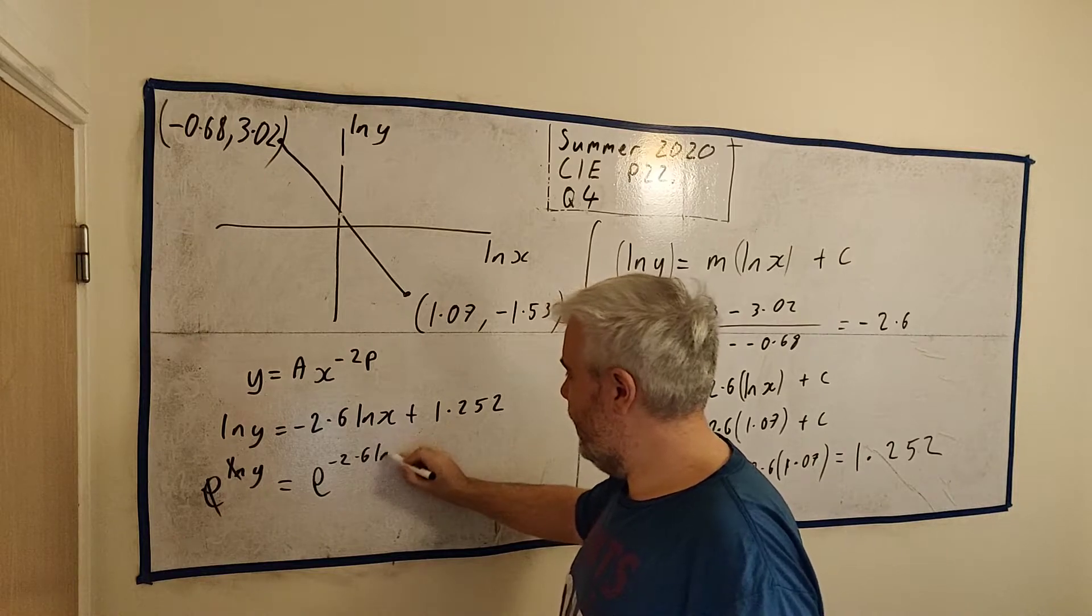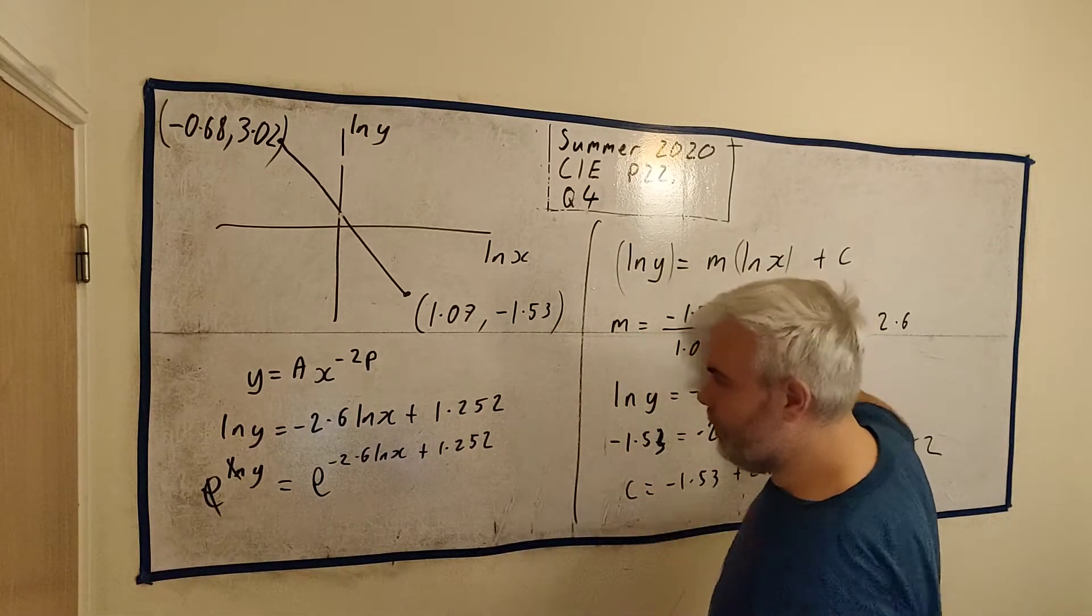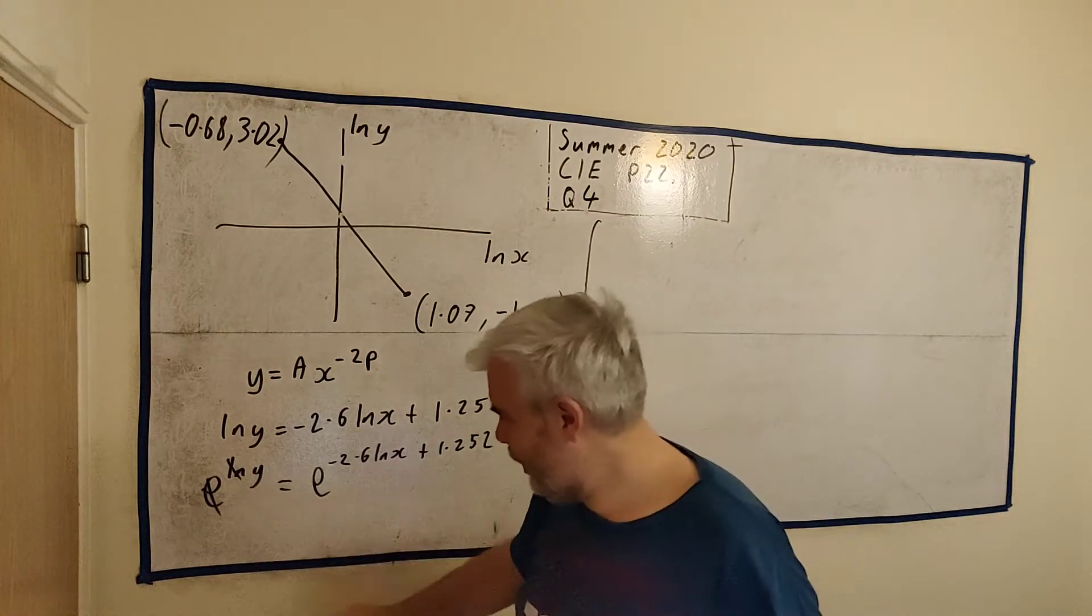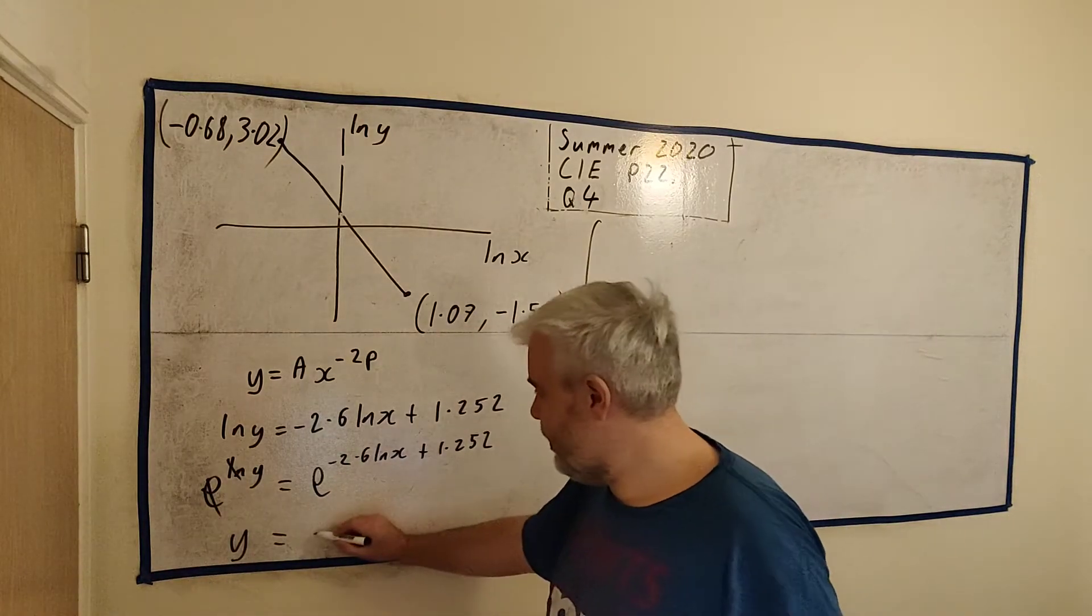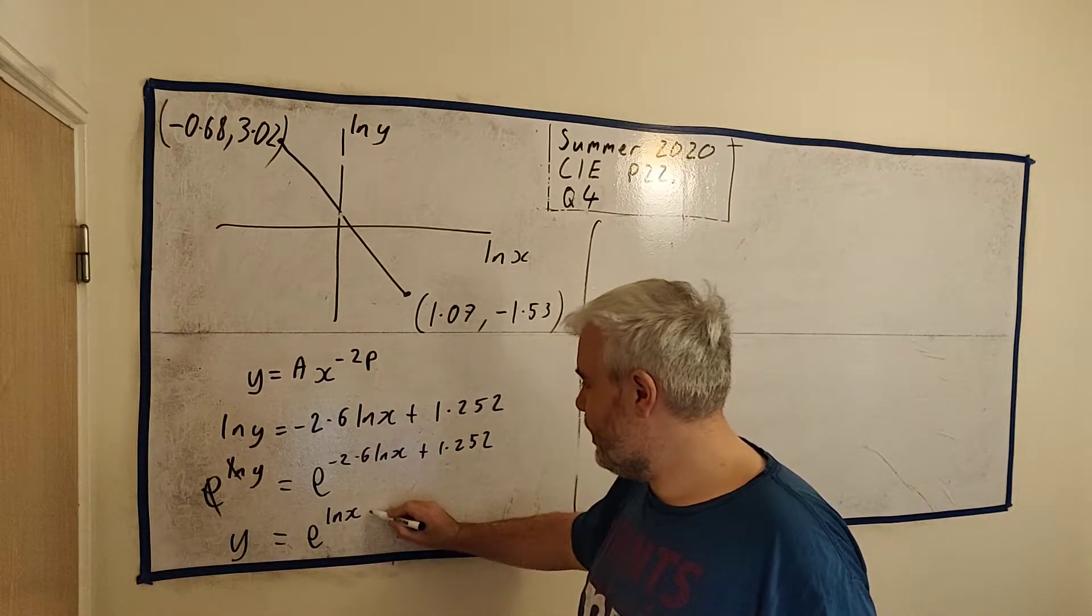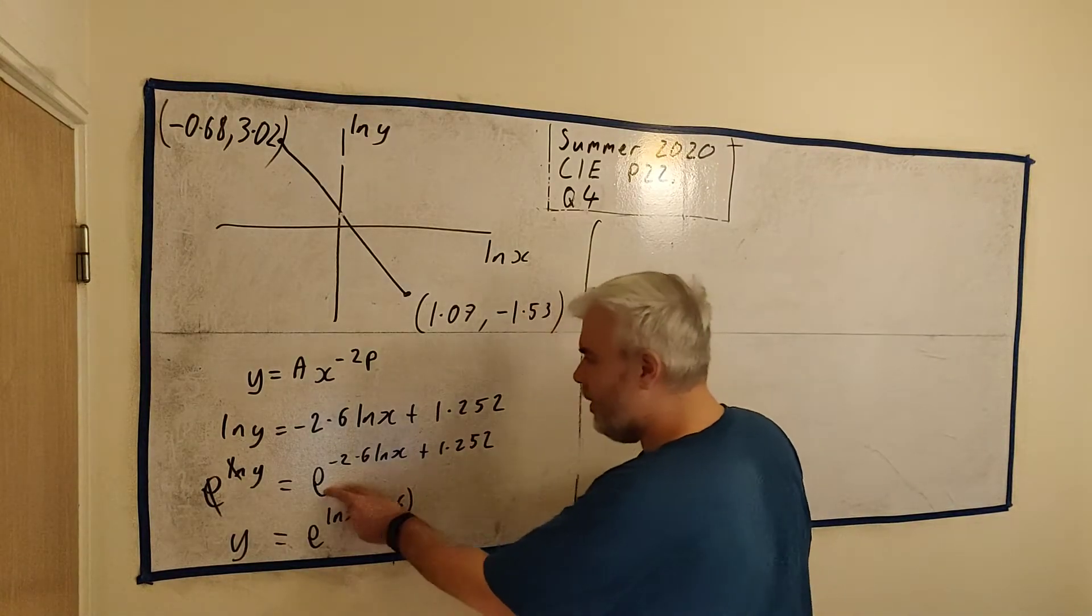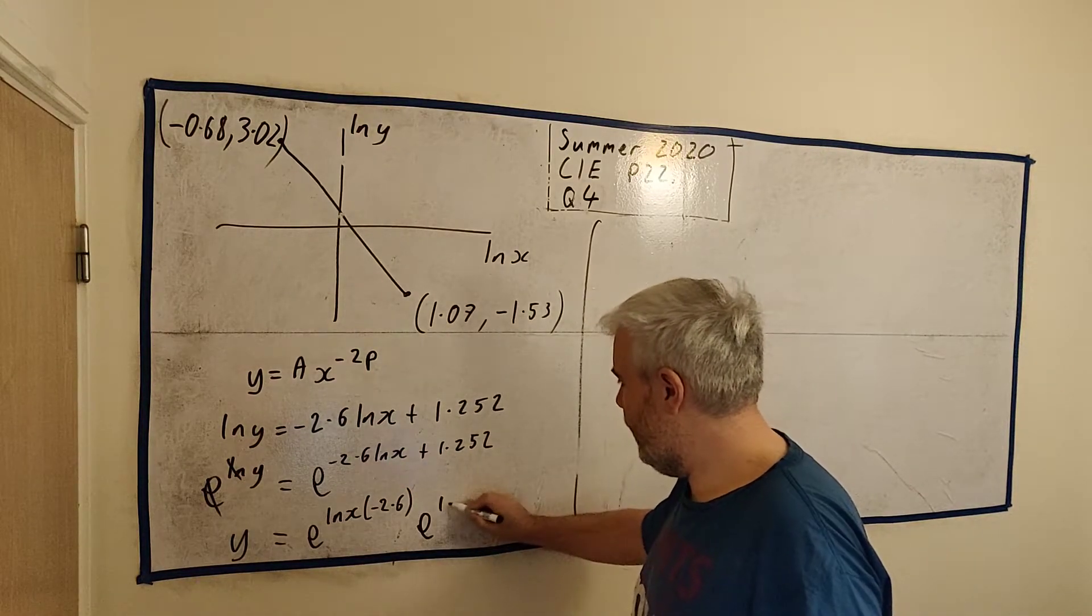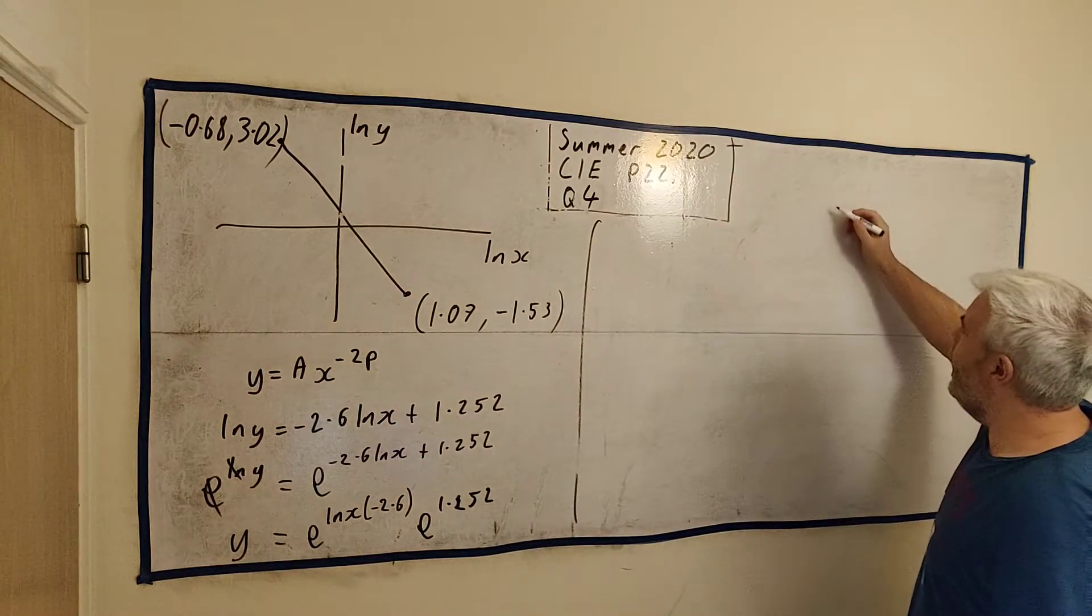So that will destroy the e and the natural log will destroy each other and we'll be left with y. So if we're going to change this, we'll have to change all of this. So we better put that on top of e as well. Minus 2.6 natural log x plus 1.252. Okay, I'm going to have to rub this out here and we'll continue this on and we'll see if we can make this work. While I've rubbed it out already, I'd probably fit more in here. Let's see, this just becomes y. And this one we can start playing around with a bit. Okay, instead of e this times this, let's do it the other way around. Natural log x times minus 2.6.